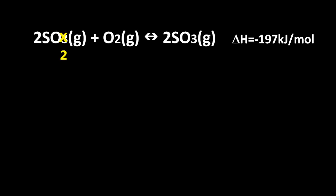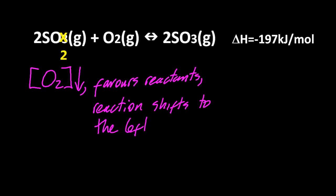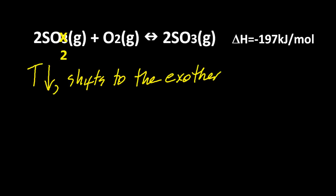This is the contact process. You need to know this for other assessment statements. If I remove some oxygen from the equilibrium, I'm going to favor the reactants. Equilibrium is going to shift to the left. That's the correct terminology to relieve the stress. And if I reduce the temperature, the equilibrium is going to shift to the exothermic side, which in this case, our ΔH is negative, is going to go to the right-hand side.